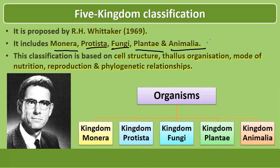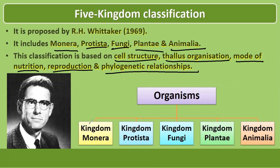Whittaker's classification was based on cell structure, organization of body, mode of nutrition, reproduction, and phylogenetic relationship. According to R.H. Whittaker, organisms are divided into five kingdoms: Monera, Protista, Fungi, Plantae and Animalia.